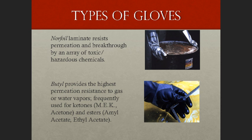There are many types of gloves — think of a glove like any other tool. Gloves must be appropriately selected to address the hazard for a particular job or task. Norfoil laminate resists permeation and breakthrough by an array of toxic and hazardous chemicals. Butyl provides the highest permeation resistance to gas or water vapors and is used for methyl ethyl ketone peroxides, methyl ethyl ketones, acetones, esters, and ethyl acetate.